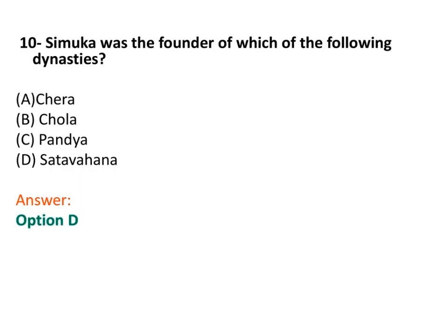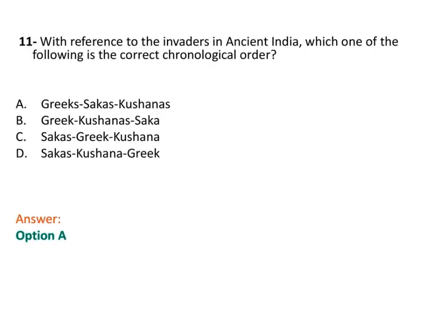Next question: Simuk was the founder of which of the following dynasties? The answer is option C, the Satvahan dynasty. Simuk was a Brahmanist but was liberal towards Buddhists and Jains as well. The capital was Pratishthan.